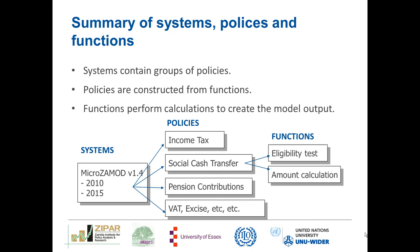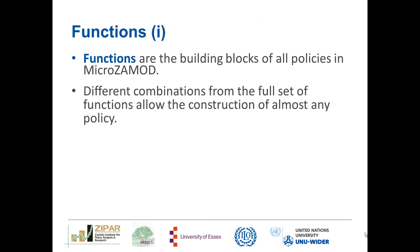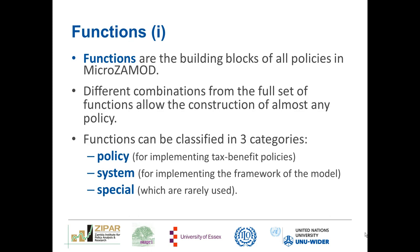Functions perform calculations to create the model output. For example, in our social cash transfer, that policy is made up of 16 functions — including functions which perform an eligibility test and a function that assigns an amount calculation. Functions are the building blocks of all policies in MicroZamod, and the combination of different functions allows for the construction of almost any policy. Functions can be classified in three categories: policy functions for implementing tax and benefit policies, system functions for implementing the framework of the model, and special functions, which are not used in MicroZamod.